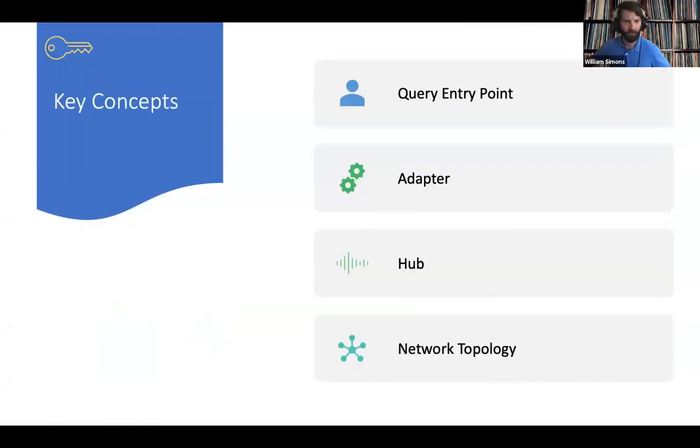I'll be covering the key concepts and components of the Shrine architecture, including our query entry point, which is the user-facing suite of applications and the services those applications rely on. The adapter, which is the site-specific worker that translates queries from the global network ontology into the local ontology and communicates with I2B2. The hub, which is our messaging router, and the overall concept of how those fit together into the current network topology that we favor.